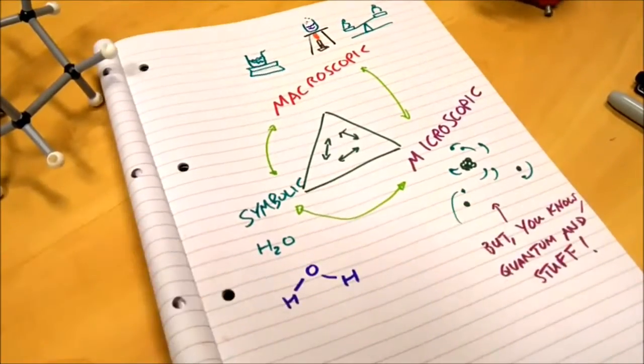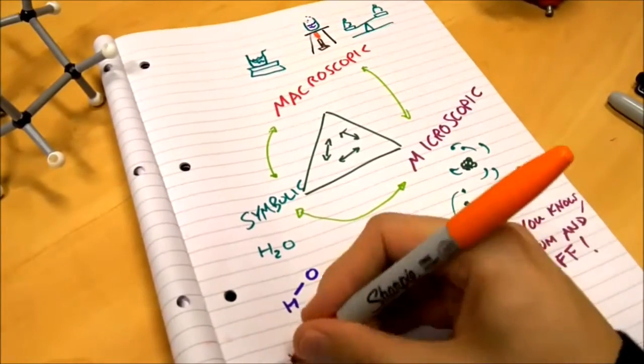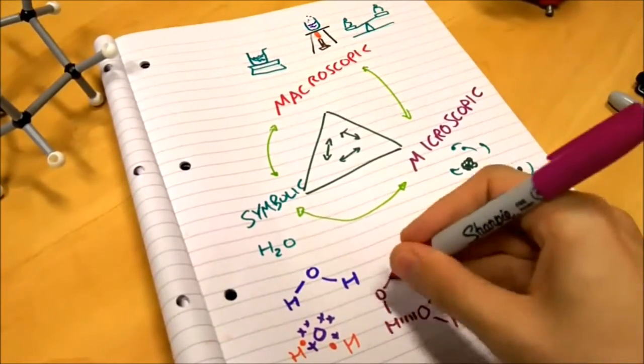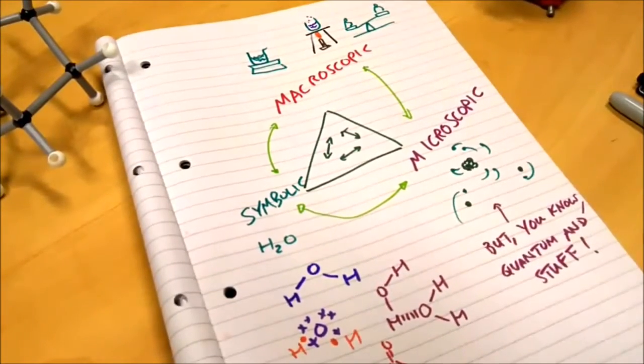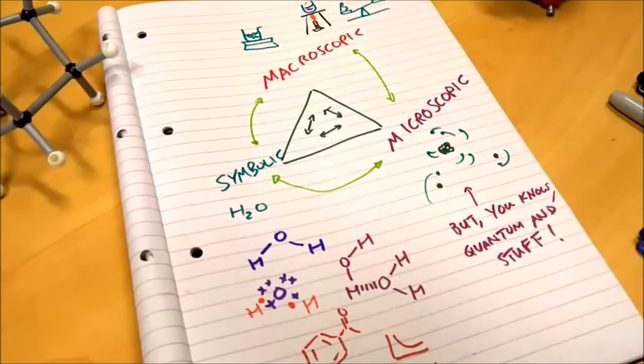In the symbolic world, we represent water as H2O, as balls and sticks, as a Lewis structure. We draw its electrons in a molecular orbital diagram and represent its bonds through lines and dashes and its charges with pluses and minuses.